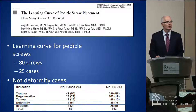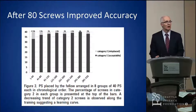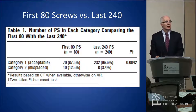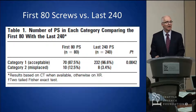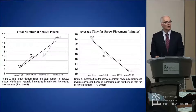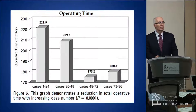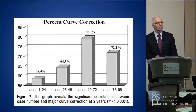Learning curves for pedicle screws: the data suggests that around 80 screws, you start to see improvement in performance of trainees or other surgeons, and their accuracy approaches that of senior surgeons, going from about 85% to 95%. Those were non-deformity cases. Barry Loner has shown a learning curve in deformity cases where both time and accuracy of screw placement — and overall curve correction — improve over time.